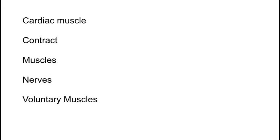Remember that cells are the building blocks of life. I want you to be able to explain that different types of cells make up tissues that make up the different organs in the human body. Today you're going to be learning about the different types of muscles in the human body. Think about the different ways that you use muscles. Are all muscle actions able to be seen?